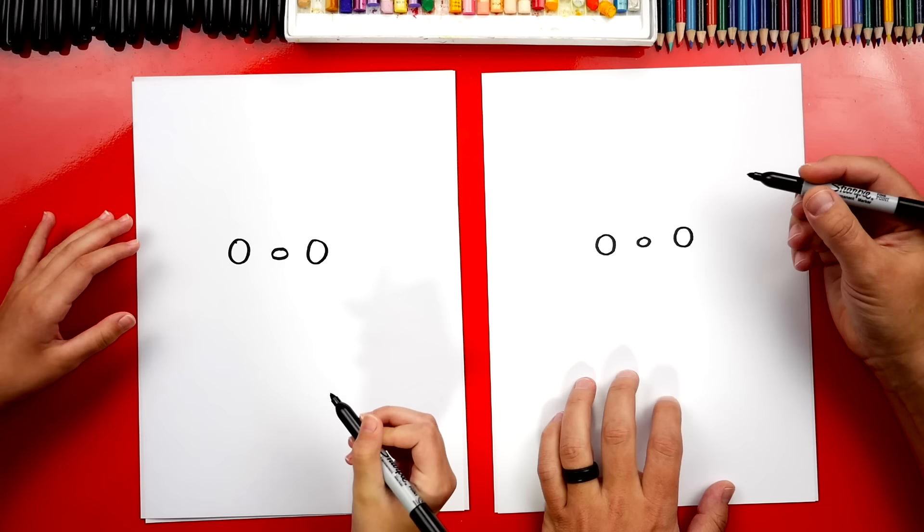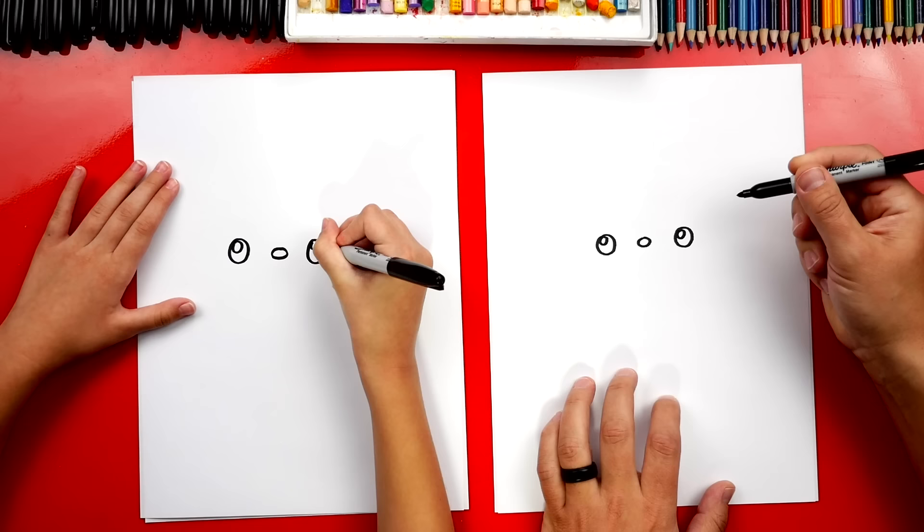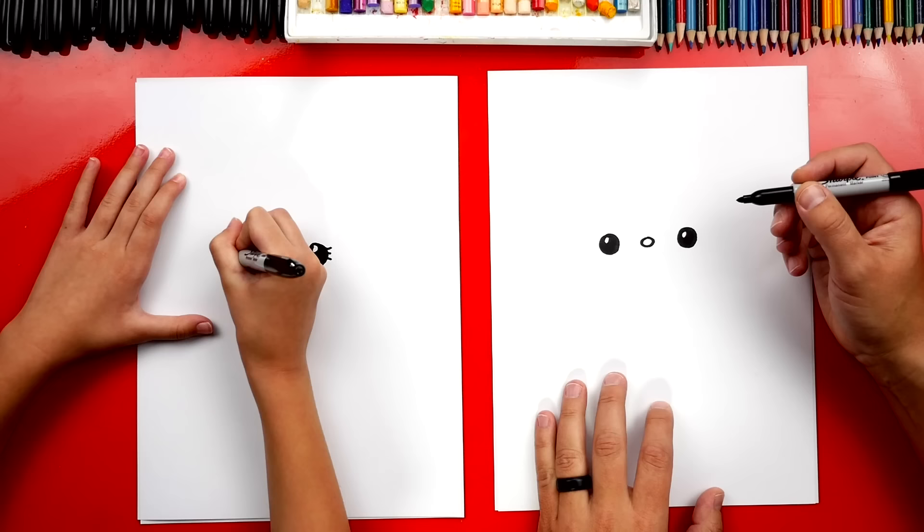Good job. Alright, now let's draw a smaller circle in the top left. And then let's color in the big circle, but leave the little circle white. Oh, you're adding eyelashes. Good job. You can draw a girl doctor and I'll draw a boy doctor. Oh yeah.